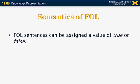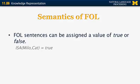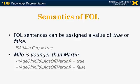Now let's look at the semantics of first-order logic. First-order logic sentences can be assigned a value of true or false. So I can say 'Milo is a cat' — this sentence is true. 'Milo is younger than Martin' can be expressed as: age of Milo is less than age of Martin, and this entire predicate has the value of true whenever Milo is younger than Martin. I can also say that the age of Milo is not equal to the age of Martin.